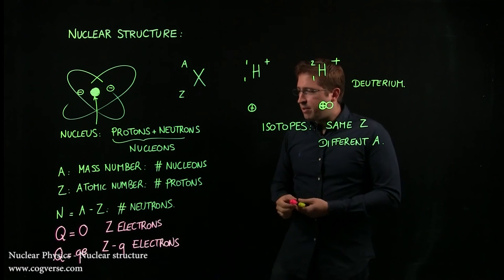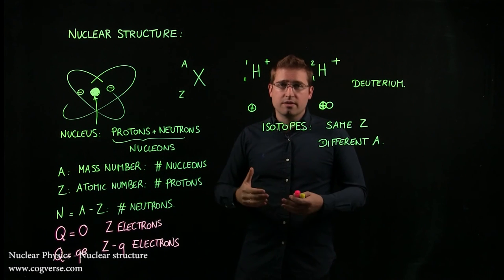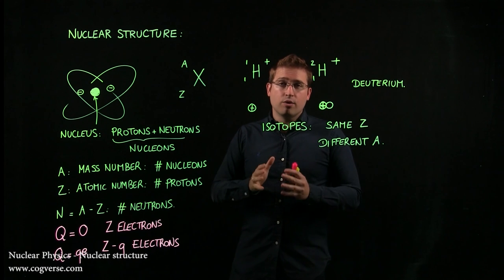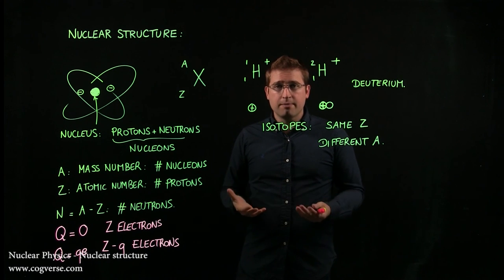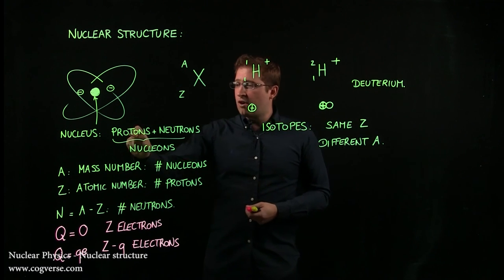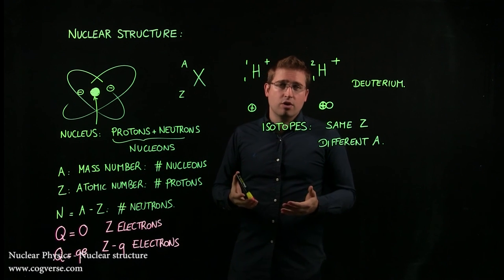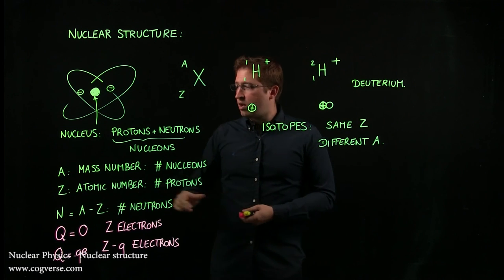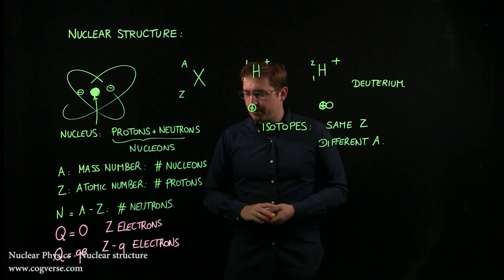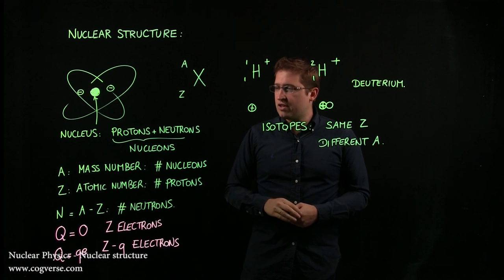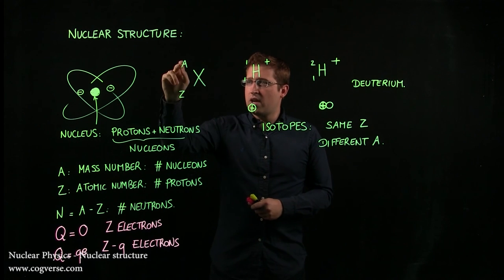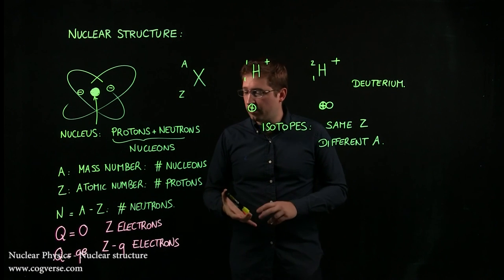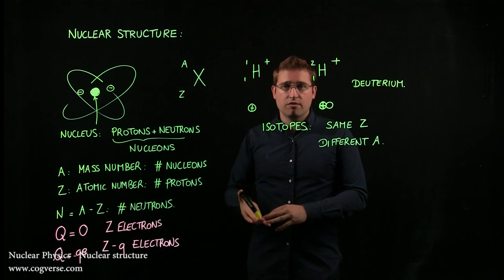One last comment is that A is called the mass number because it's the total number of protons and neutrons, and over 99% of the atom mass is from protons and neutrons. In other words, electrons contribute to the total mass, but only marginally, and that's why A is called the mass number. But we'll revisit that eventually. So what you need to remember is what A and Z are and how to find the number of protons, nucleons, neutrons, and electrons for a given element, and also remember what isotopes are.